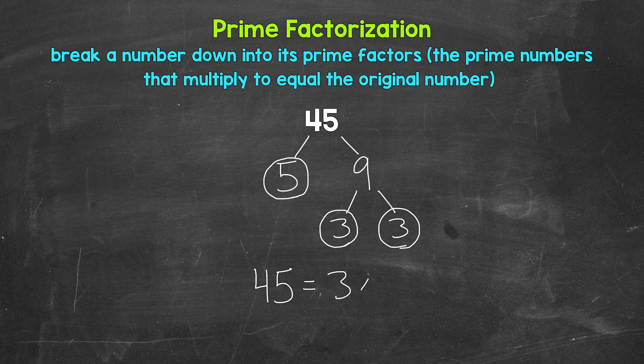So we have 3 times 3 times 5. If we have the correct prime numbers, they will multiply to equal our original number. 3 times 3 is 9. Times 5 is 45. So we are correct here.